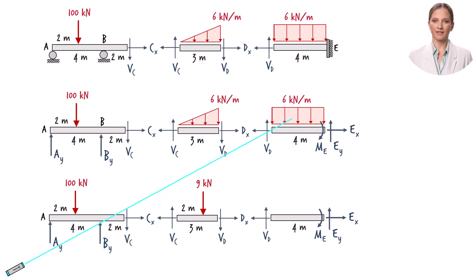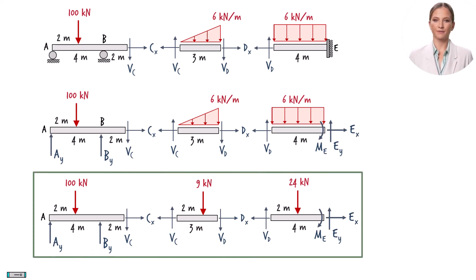This rectangle, having an area of 24, can be replaced with a point load of 24 kN, placed on the beam at the geometric center of the rectangle. This constitutes the complete free body diagram for the entire beam.